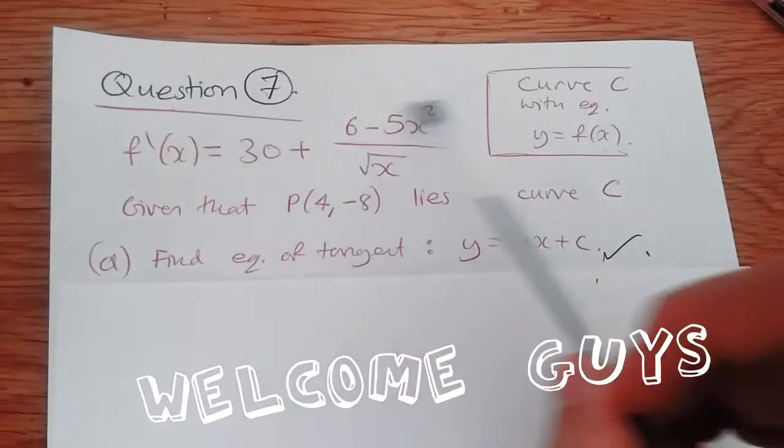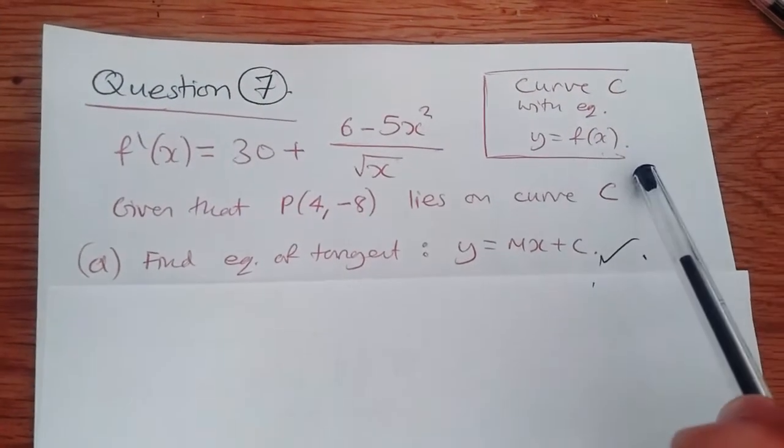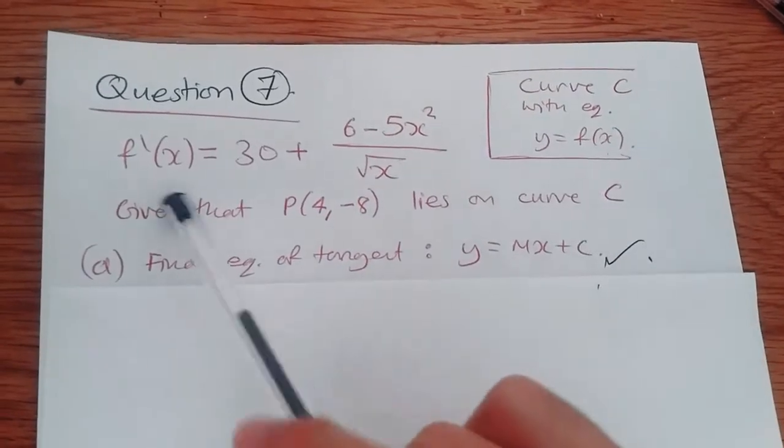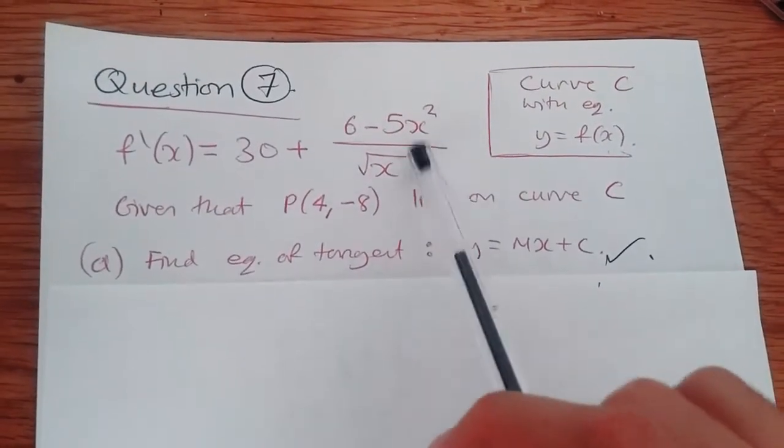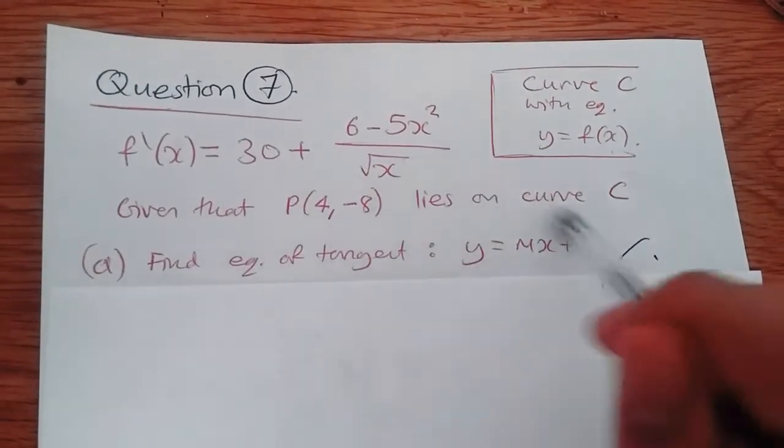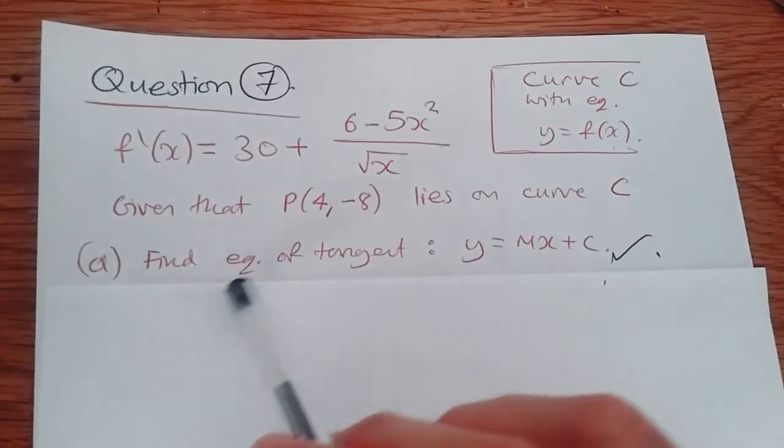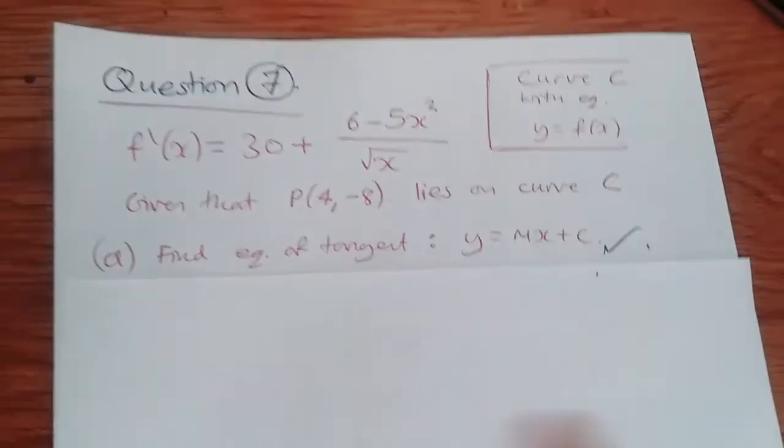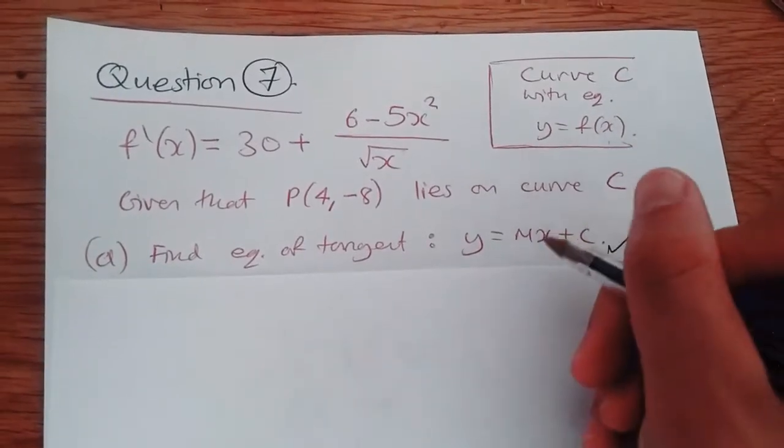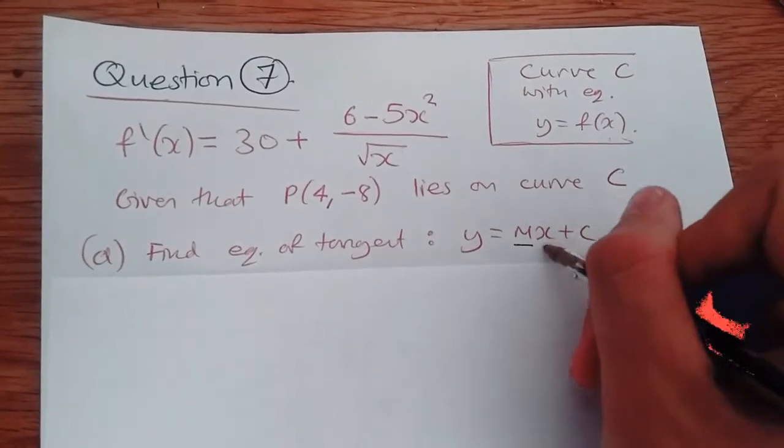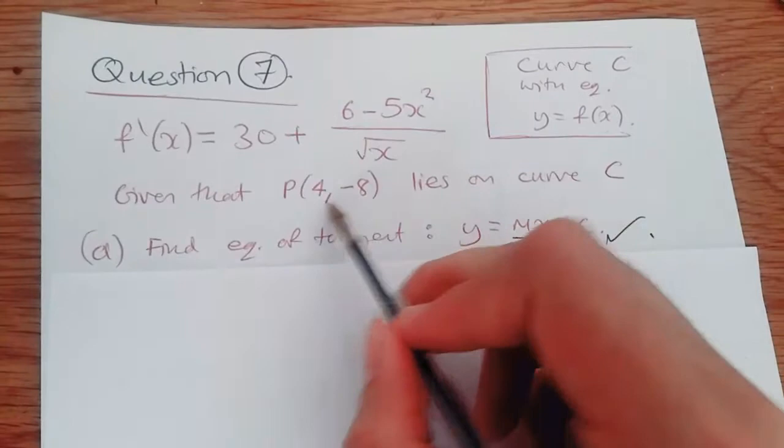Number 7. So here we're given a curve C with equation y equals f(x) and we're also given the derivative of this equation over here. Knowing that P lies on this curve C, we're asked to find an equation of a tangent in this form. What do we need to know firstly? First we need to know what the gradient m is, and we already know what x and y is. That's given by this point.